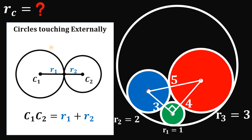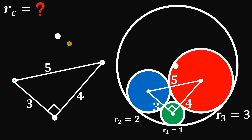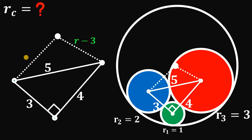Another concept needed here is when two circles touch internally: the distance between the two centers must be equal to the difference of their radii. So let's get the center of the big circle. Since the radius of the red circle is 3, the distance between the center of the big circle and that point must be R minus 3. Similarly, the other distances are R minus 2 and R minus 1.